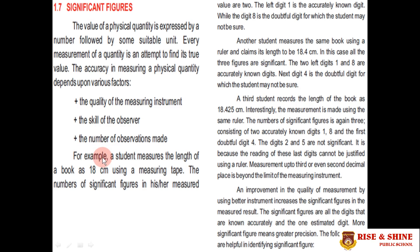Consider a student who measures the length of a book using a meter rule and gets 18 cm. Here, 1 and 8 are accurately known digits, and the last digit is doubtful. A second student measures 18.4 cm — here 1 and 8 are accurately known, and 4 is the doubtful digit. A third student measures 18.42 cm — 1 and 8 are accurately known, 4 is the first doubtful digit, and 2 and 5 are not significant.